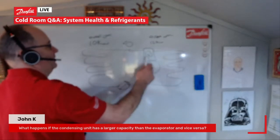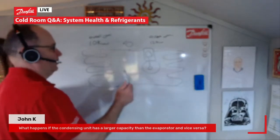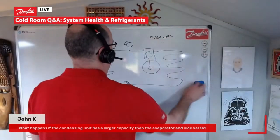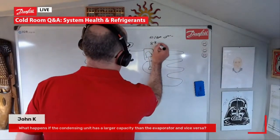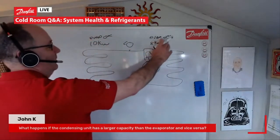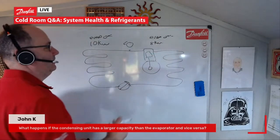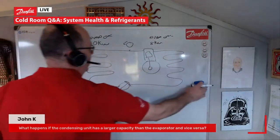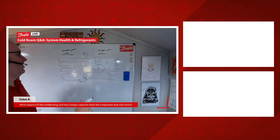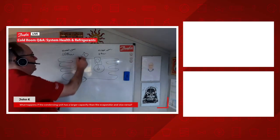If you have a compressor that's larger than the evaporator, suction pressure will rise a little bit. Generally — and this is my own personal feeling — I would much rather have an evaporator that is slightly larger than the compressor or the condensing unit part, because our suction pressure will rise, which is good for energy saving. It's also good because we have a higher relative humidity on our cooler, because we're not extracting so much moisture out of the room itself. I hope that answers that one, John.